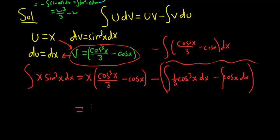I'm going to go ahead and distribute the x here. It's one third x cosine cubed x minus x cosine x. And let's do this integral on the side. This is one third cosine cubed. So that's just like the one we did earlier. It's just like sine cubed. Same deal.